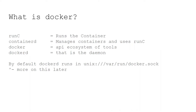Docker open sourced the core of its infrastructure — they were going to make money building a container orchestrator, until Kubernetes came out and their business model basically exploded. Runc is what runs a container and does all the kernel work. Containerd manages containers and uses runc. Then you have the Docker daemon — dockerd — that controls how Docker operates. By default, it's bound to a Unix socket.